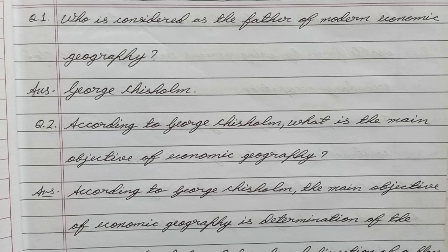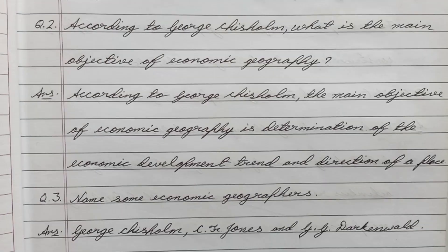Question number one: Who is considered as the father of modern economic geography? Answer: George Chisholm.